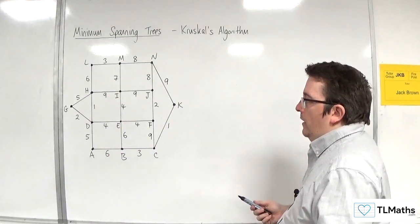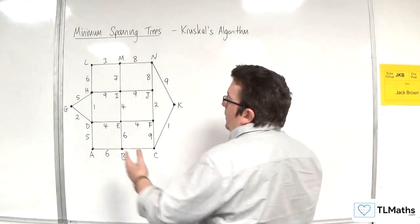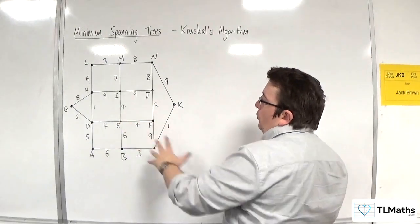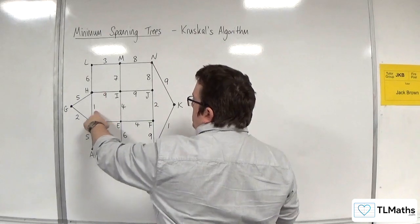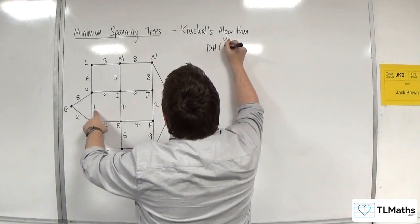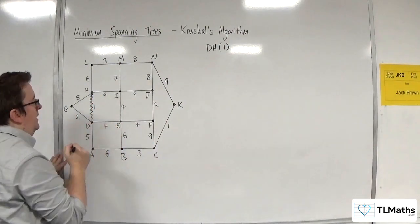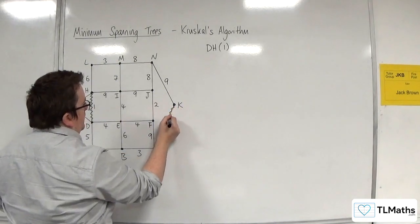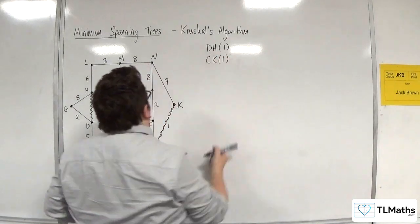What I'm looking for are edges of the smallest weight. I can see two 1s here. Both of those are going to get picked because they're not going to cause a cycle. I can choose which order I'm going to do them in. I'm going to do them in this order. So DH is going to go first, DH of weight 1. I'm going to have that one. And I'm also going to have this one here, which is CK.